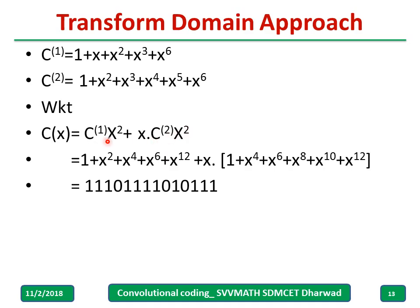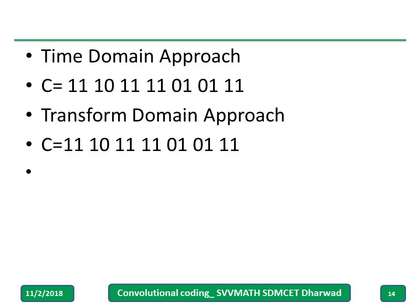The total codeword polynomial c of x is given by c of x (1) into x squared plus x into c of x (2) into x squared, because we have two generators (n equals 2), hence x squared. If there were g1, g2, g3, it would be x cubed. After multiplying and converting to 0s and 1s, you get the same codeword as the time domain approach — confirming both methods agree.